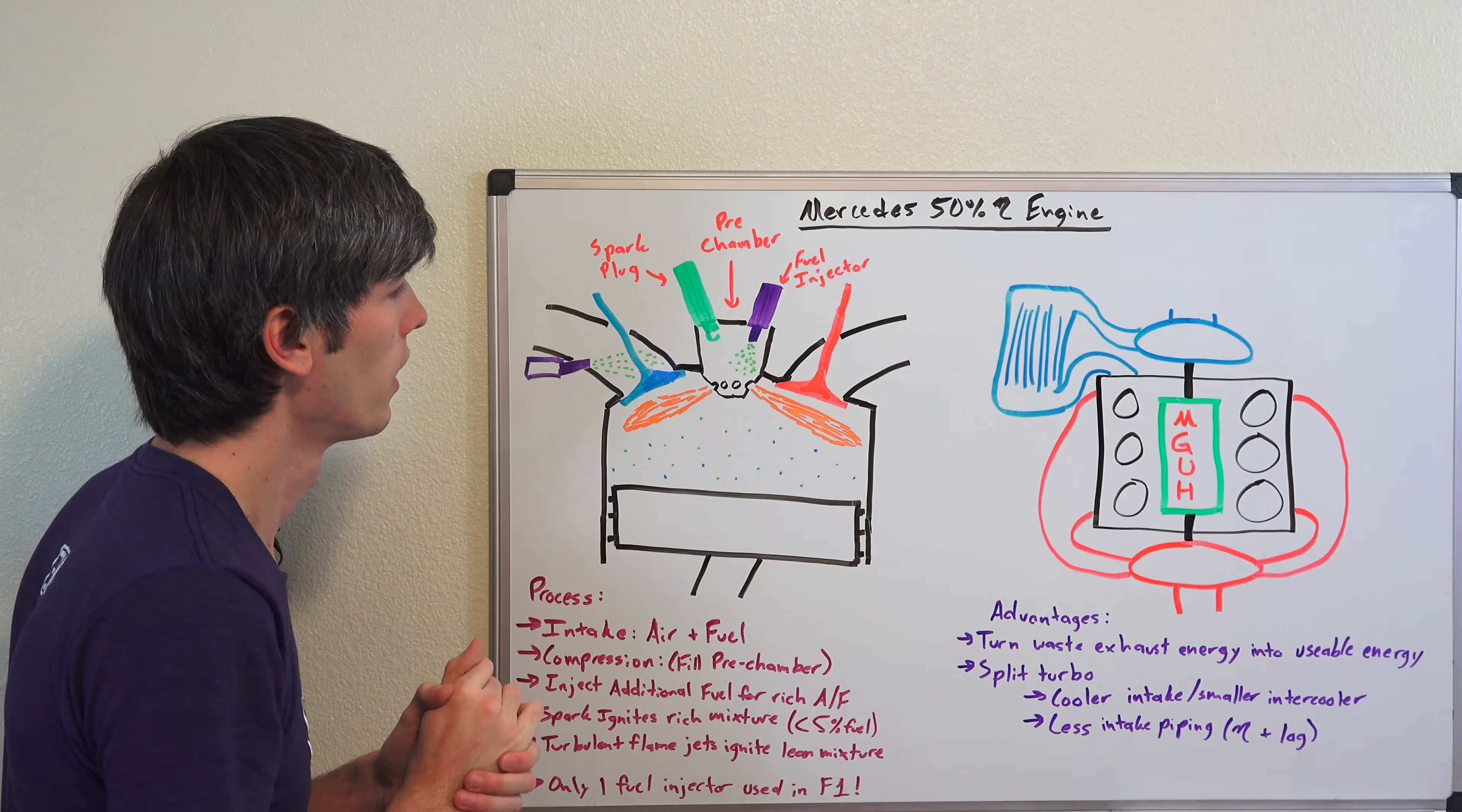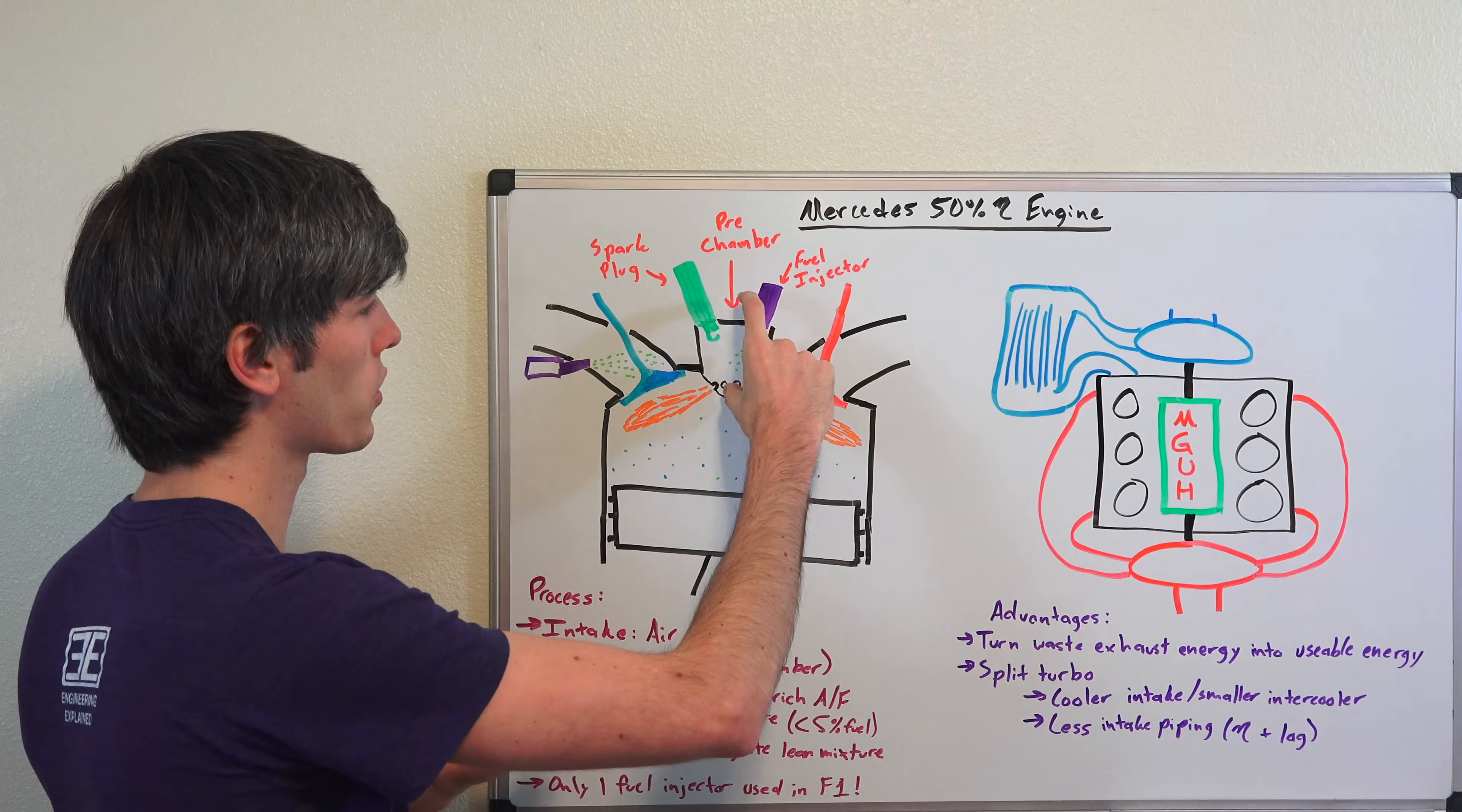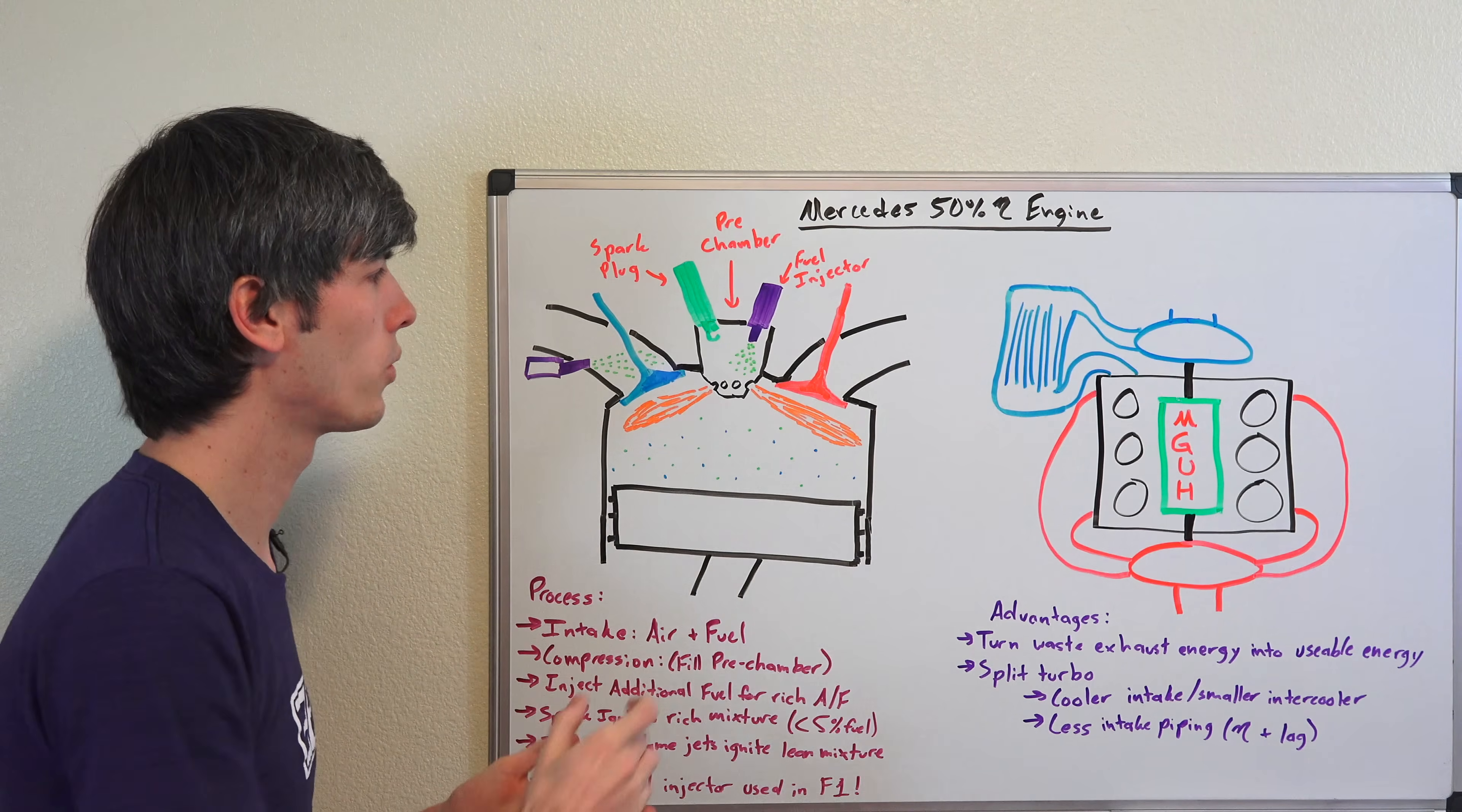Now before it fires the spark plug, you also have an additional fuel injector so that you can make the air fuel ratio within this chamber really rich, so that you can ensure that you have good combustion occur. Now outside of it, you're going to have really lean air and fuel. And generally speaking, if you have just a spark plug sitting in the middle here and a very lean air and fuel mixture, that lean air and fuel mixture does not promote good combustion. It doesn't all burn and as a result it's not that efficient, it can damage your engine.